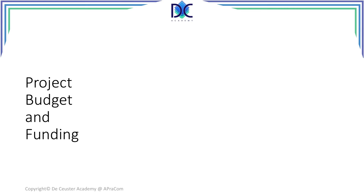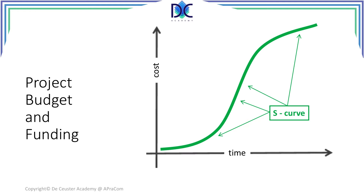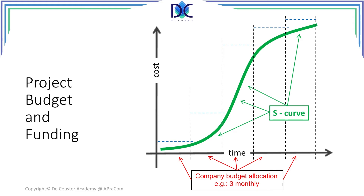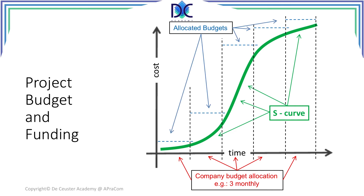Let's look at the project budget and the funding. First, we have the S-curve — the green curve showing the spending of money over time, and this curve looks like an S. Now the company will allocate budgets over a certain period. Here we have vertical lines indicating the budgeting period. For every period, the blue line shows the money that you have available to work on your project — this is the company budget allocation, for example every three months, or it can be less or more depending on your company policies.